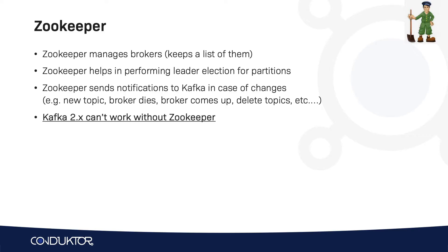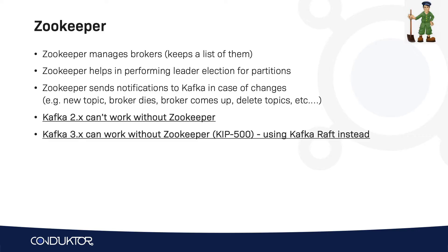Kafka version 2.x cannot work without ZooKeeper. Kafka version 3.x, which is about to come out, can work without ZooKeeper — this is KIP-500. It will use the Kafka Raft as an in-broker replacement for ZooKeeper, but it will have both a ZooKeeper and a non-ZooKeeper mode. Then Kafka 4.x will not have ZooKeeper at all, and everything will be done using Kafka brokers.